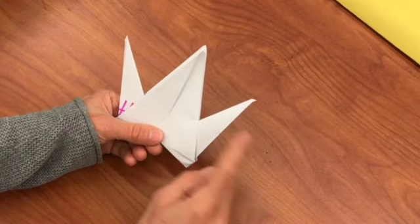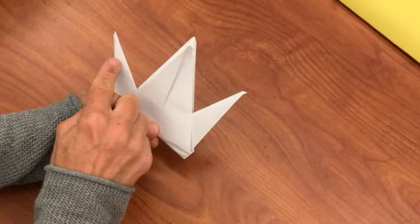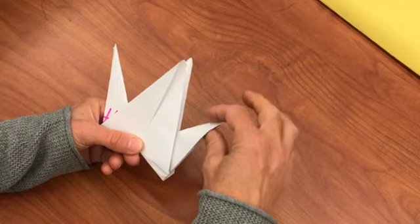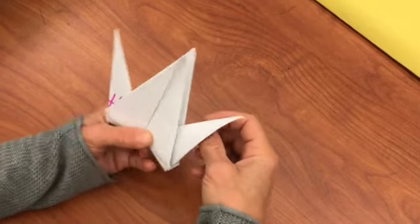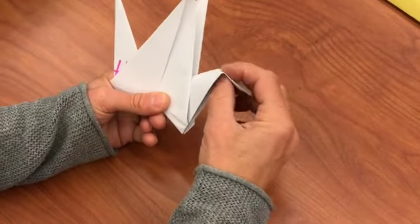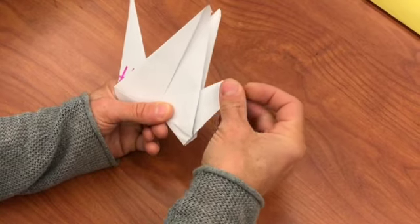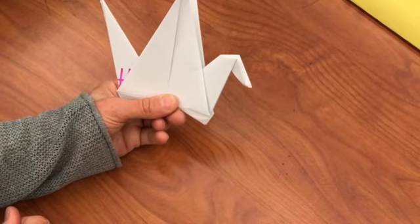Now decide which side you want to be the head. Take your thumb and tuck it in between those flaps of paper. You can kind of pinch it down, crease it, and you've got your head.